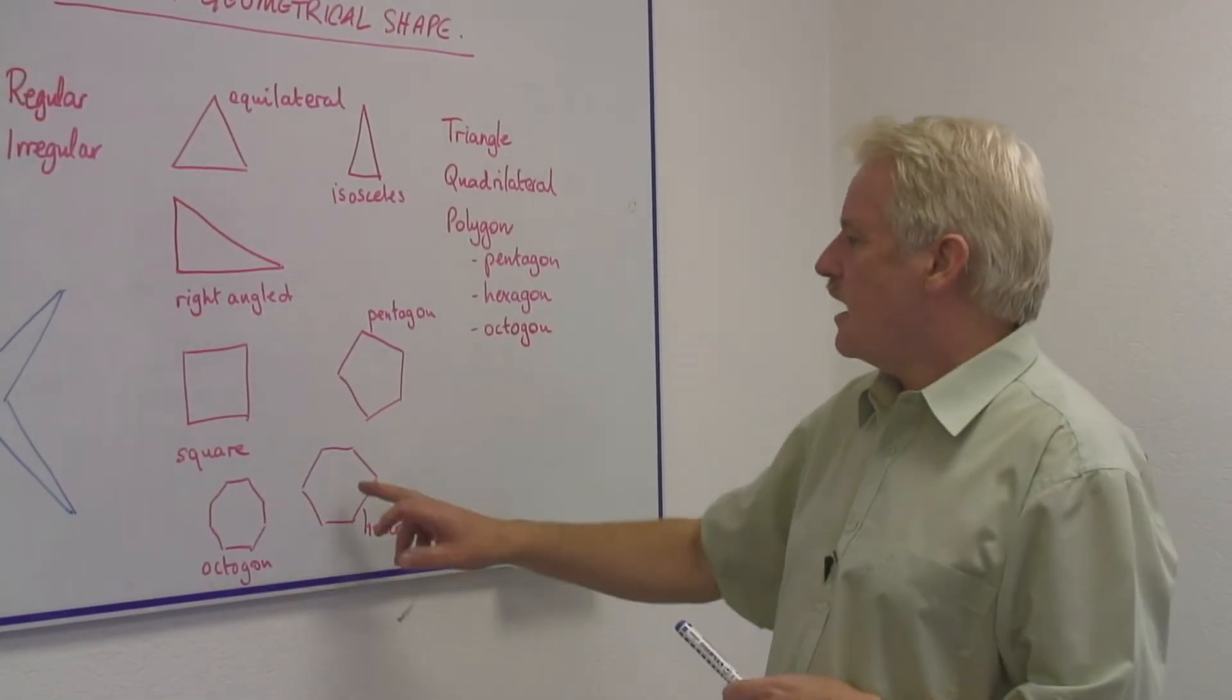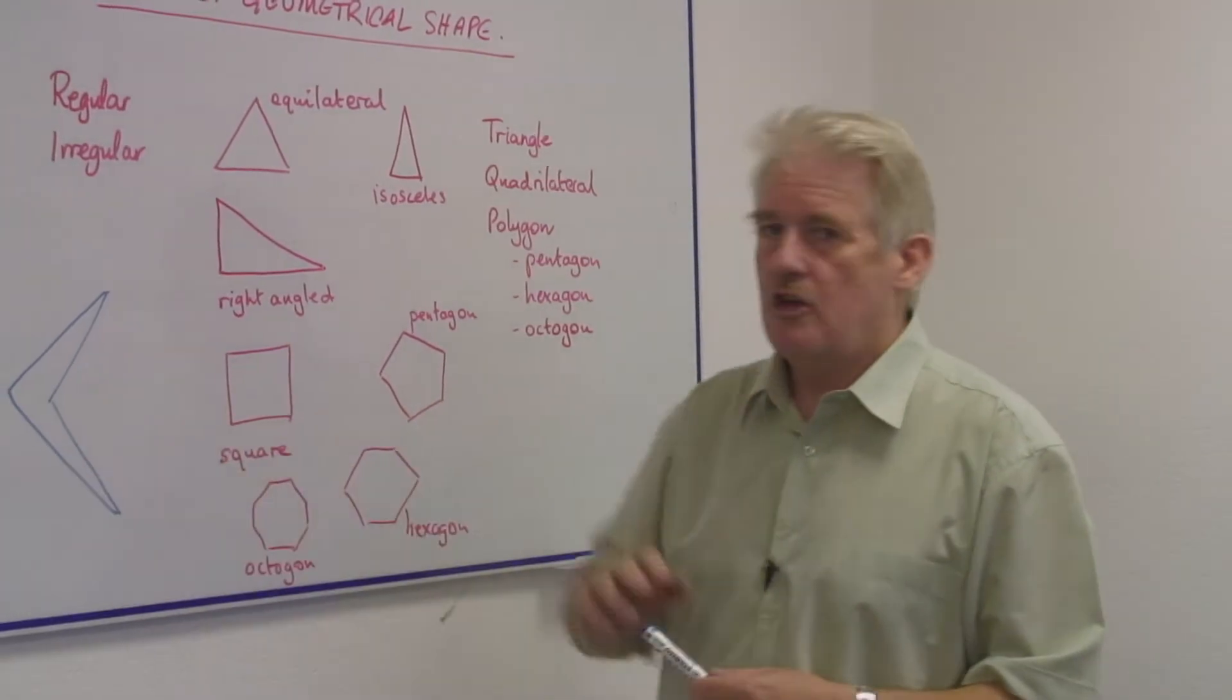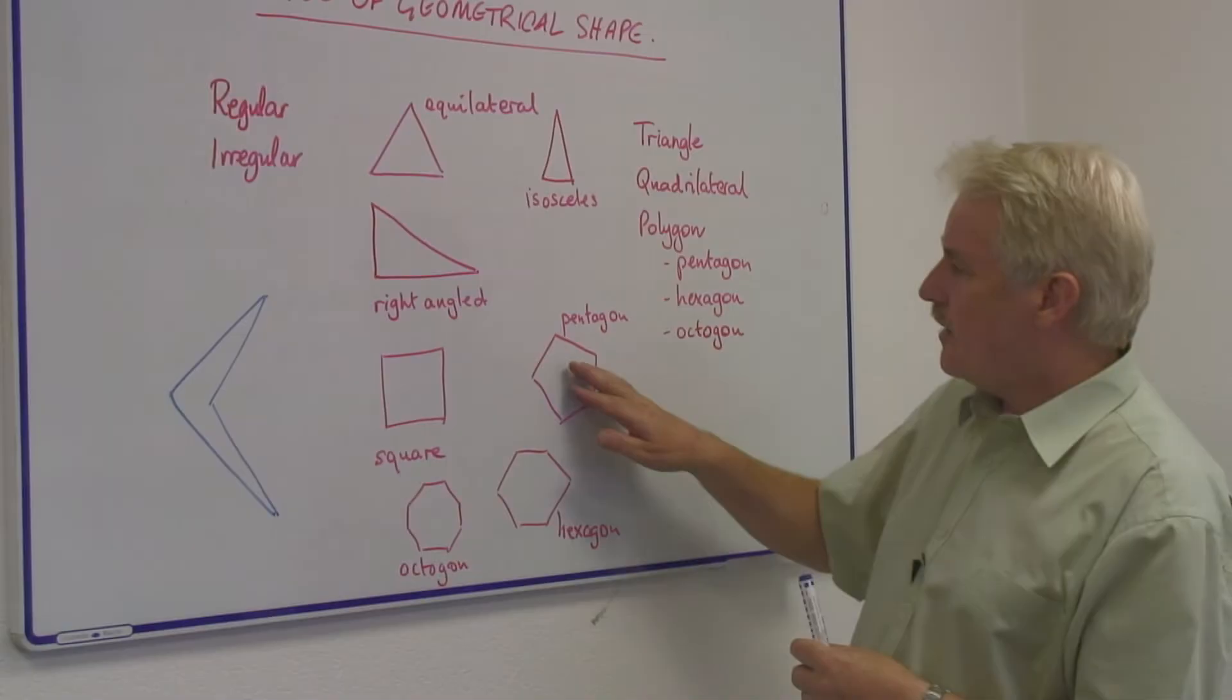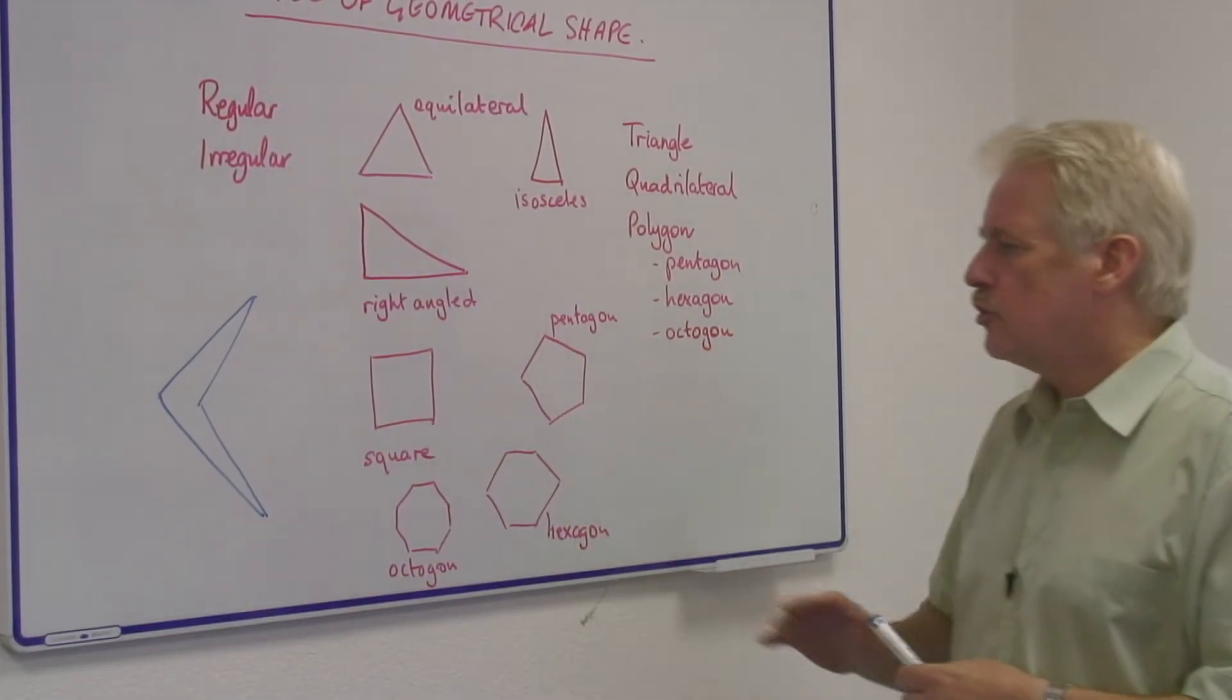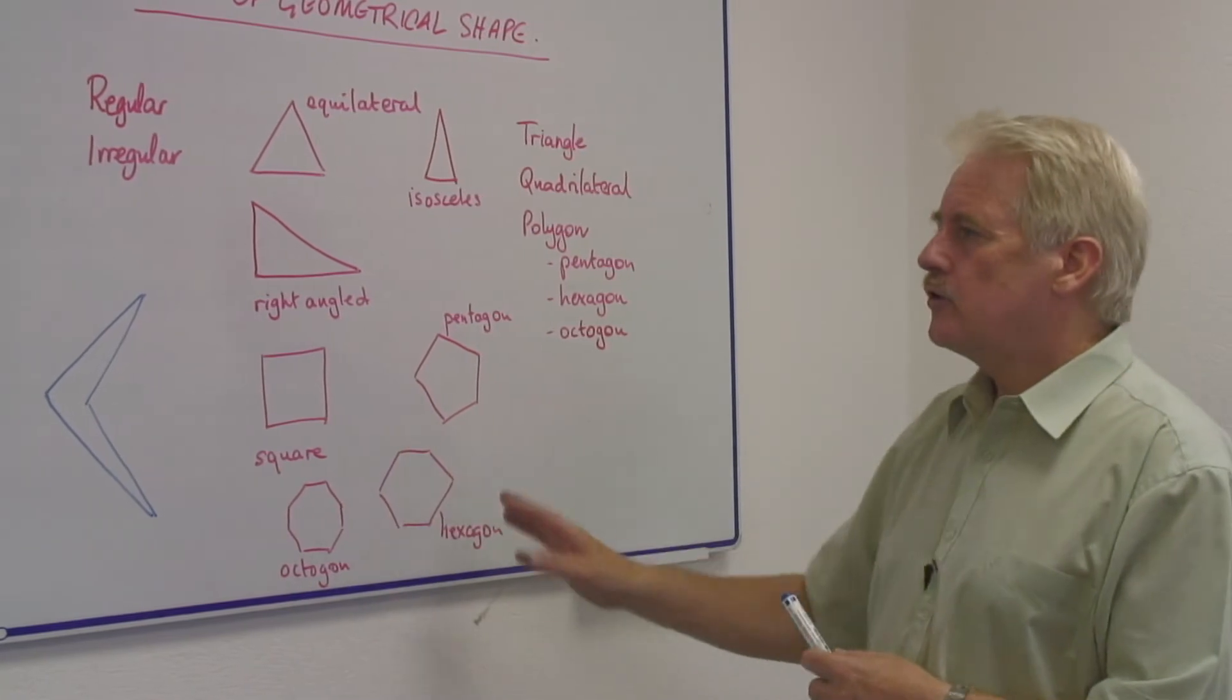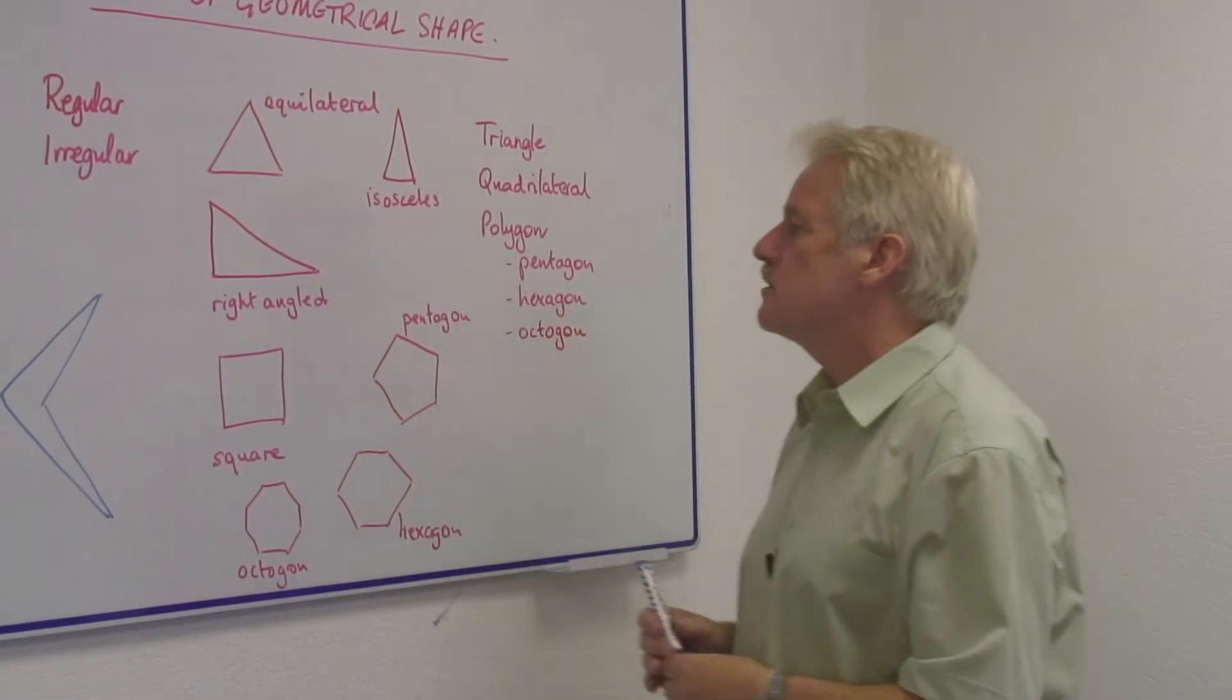Pentagons, octagons, hexagons can all have this concave shape. And therefore, we should tend to use a more regular shape, and talk about the angles and the regular nature of these objects.